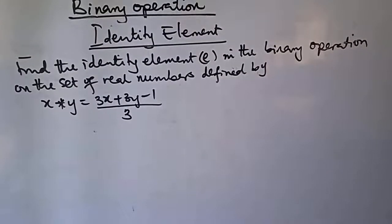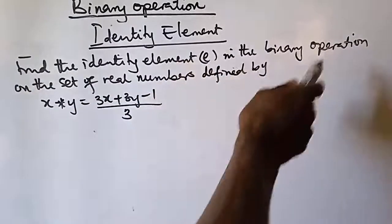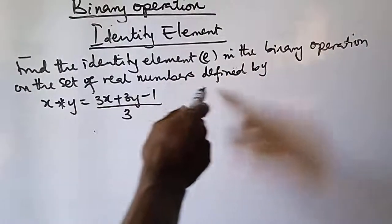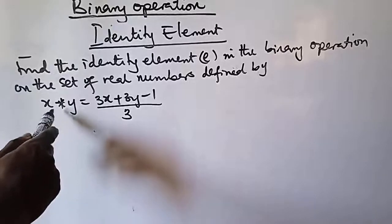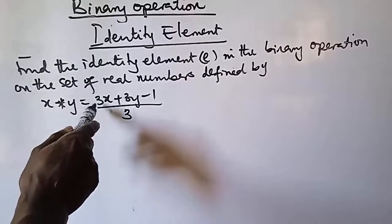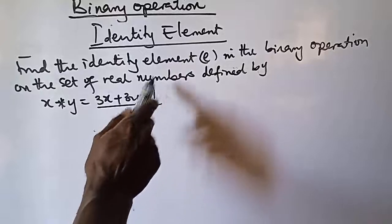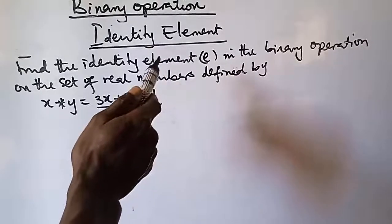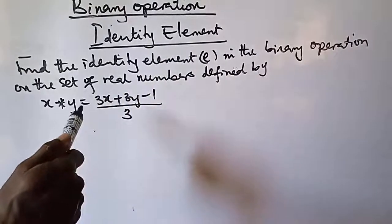In this example, we are told to find the identity element e in the binary operation on the set of real numbers defined by: x operation y equals (3x + 3y − 1) / 3.